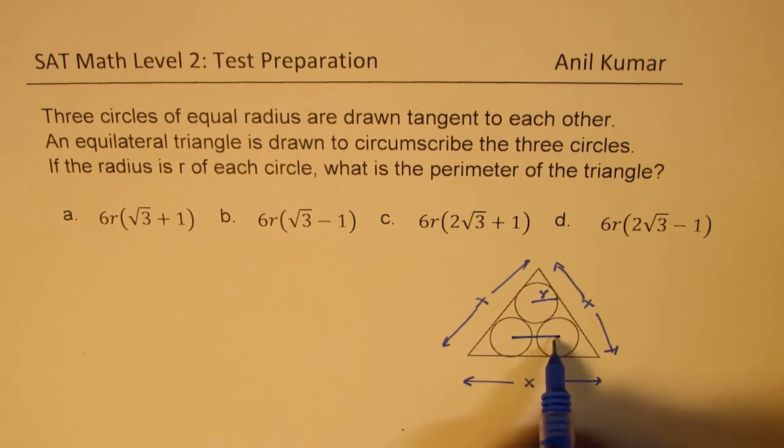So R and R, we know this distance will be 2R. To find the length, we need to find what is this distance and what is that. From the symmetry, we can work on one side. So that's what we are going to do.